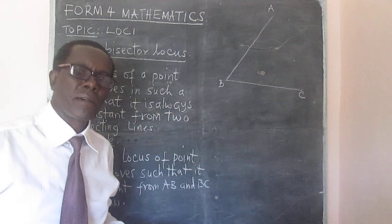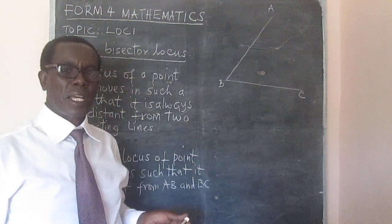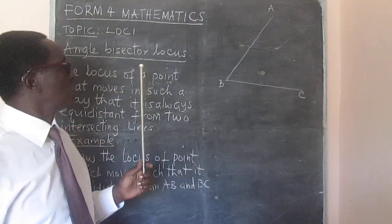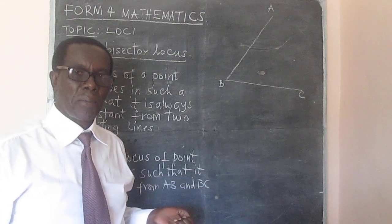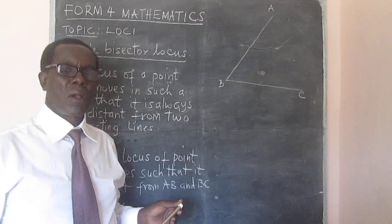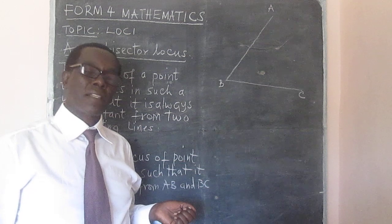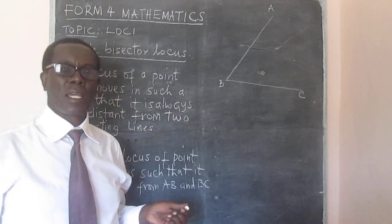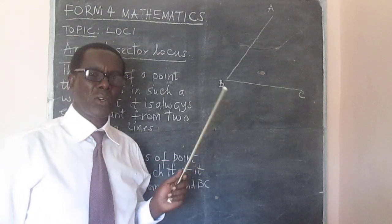My name is James Minor, welcome to my mathematics class. In this class we are going to look at loci, which is a Form 4 mathematics topic. This lesson is a continuation on the topic of loci. Last time we looked at the perpendicular bisector locus. Today we want to look at a different type of locus.